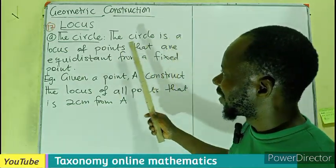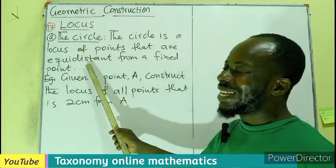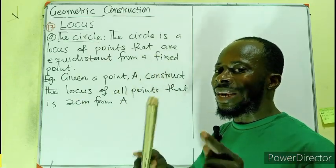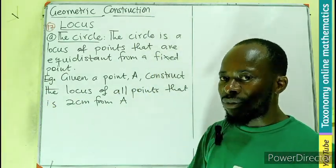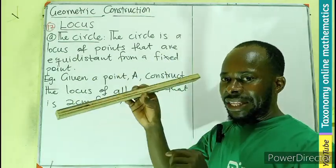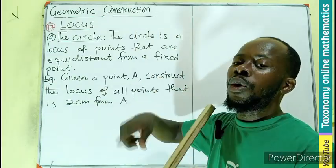The circle is a locus of points that are equidistant from a fixed point. Don't forget we have described what equidistance simply means in the previous episode. So if we are having that, then a point equidistant from that particular point will form a circle.